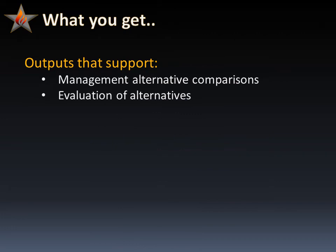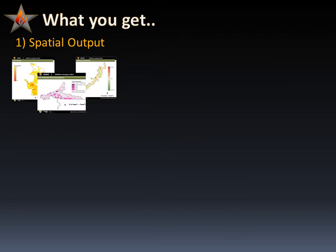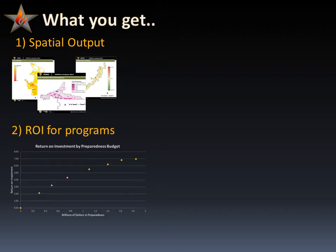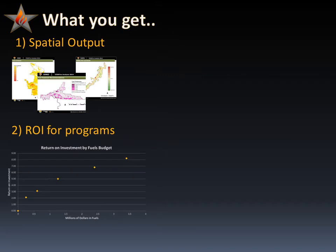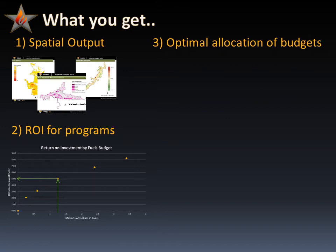Starfire provides managers and planners with essential outputs for comparing, evaluating, and justifying their management decisions. These include a map book that contains the spatial outputs associated with each of Starfire's four assessments, and a return on investment for fuel, smoke, and the preparedness programs. Starfire provides the ability to analyze a range of budget levels, and the manager can demonstrate how different funding levels impact the programs and the return on investment. Optimal budget allocations in Starfire are unique in their ability to show how the funding of programs interact.